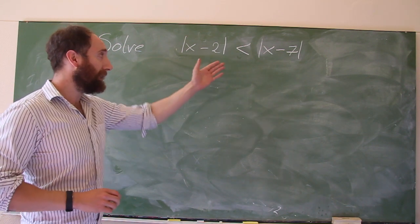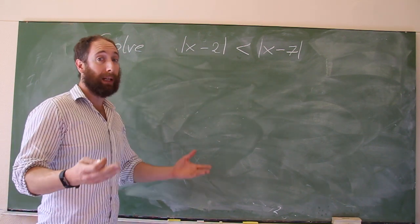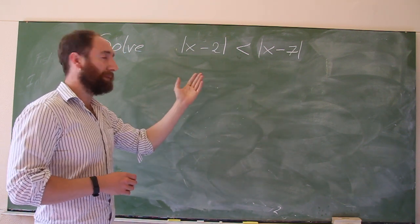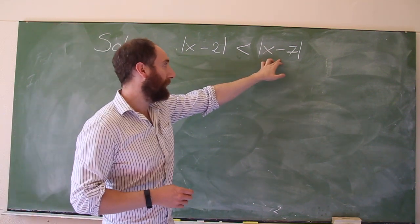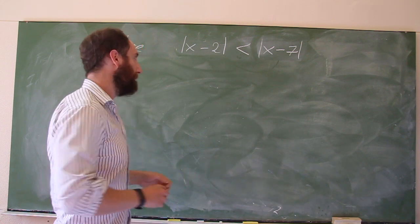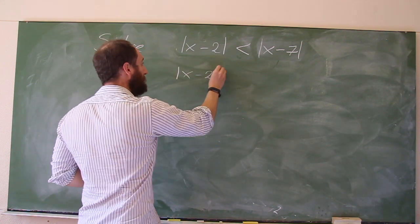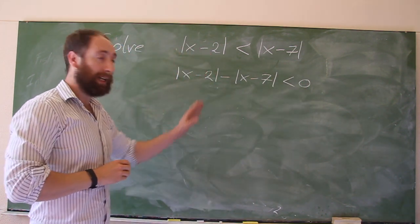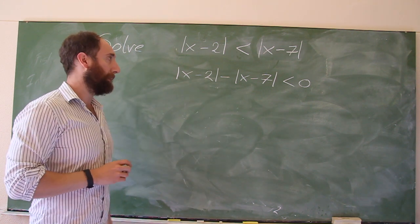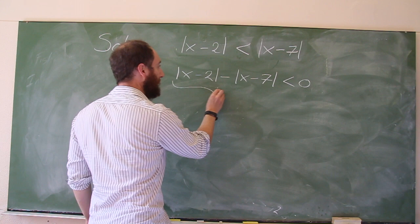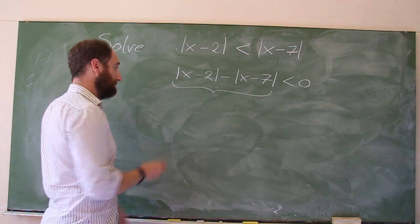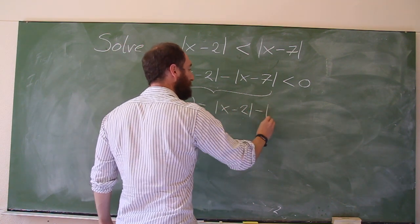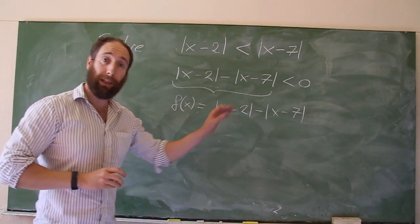The first thing we do is take this expression and use the rules we know to subtract something from both sides — essentially move a term to the other side, as you would with a normal equation. So we have |x minus 2| minus |x minus 7| is less than 0. This is the inequality we want to solve. We can take this object and define a function: f(x) equals |x minus 2| minus |x minus 7|. That's a perfectly well-defined function.